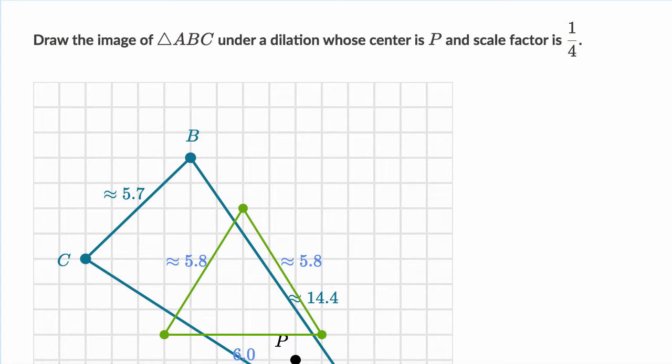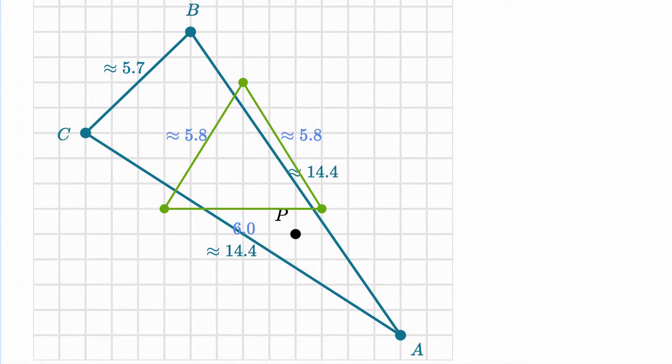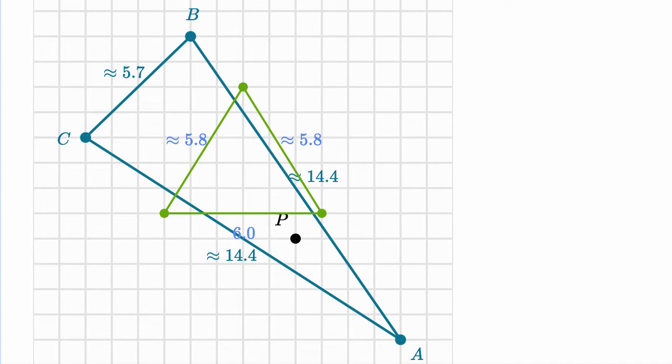And what we see here is the widget on Khan Academy where we can do that. So we have this figure, this triangle ABC, A, B, C, right over here.